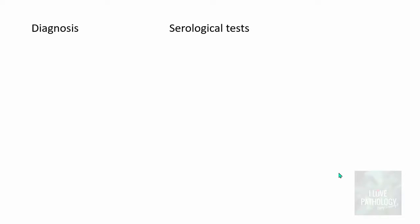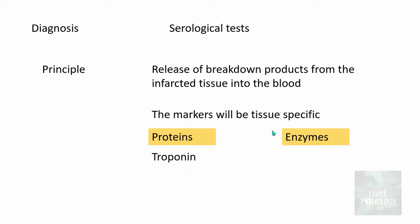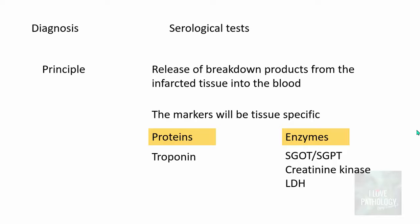Infarction, particularly myocardial infarction, can be diagnosed by serological tests. The principle is that breakdown products from the infarcted tissue are released into the blood, and these markers are tissue-specific. Markers include proteins such as troponin — a cardiac-specific protein — where a rise in cardiac troponin indicates myocardial infarction. Enzyme markers include SGOT, SGPT, creatinine kinase, and lactate dehydrogenase. Creatinine kinase can be elevated in skeletal muscle infarcts. LDH is a non-specific marker and can be elevated in infarctions of the heart, kidney, or lungs.